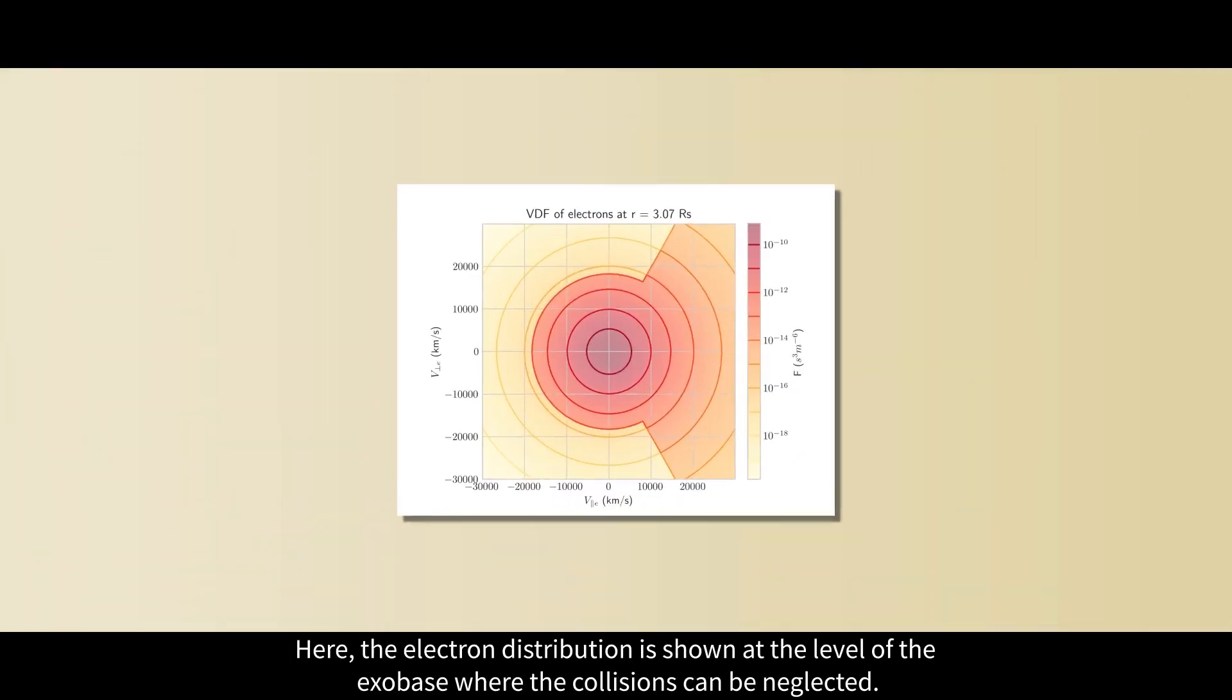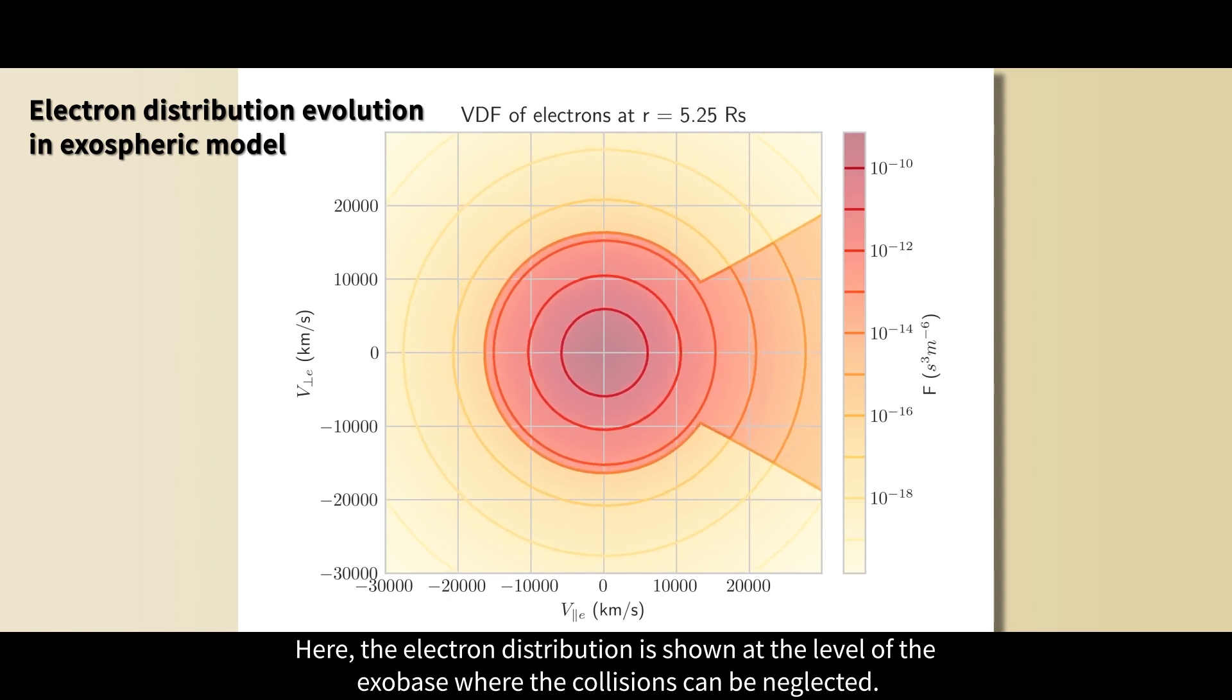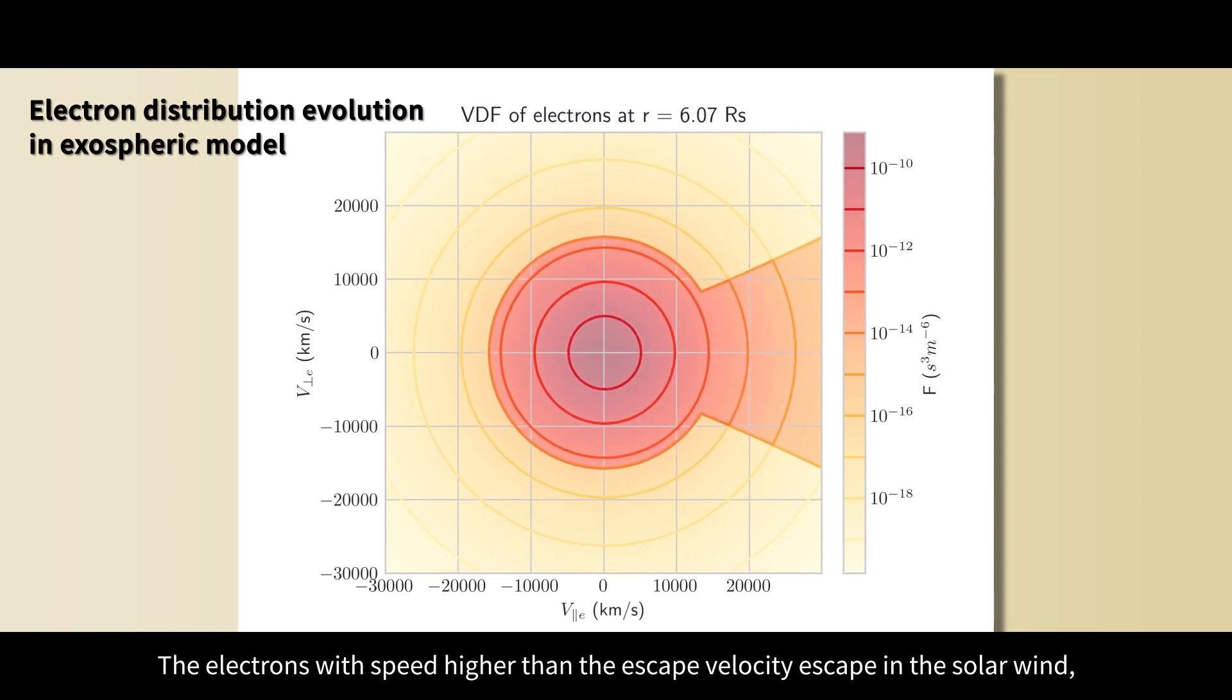Here the electron distribution is shown at the level of the exobase, where the collisions can be neglected. The electrons with speed higher than the escape velocity escape in the solar wind and do not come back to the Sun.